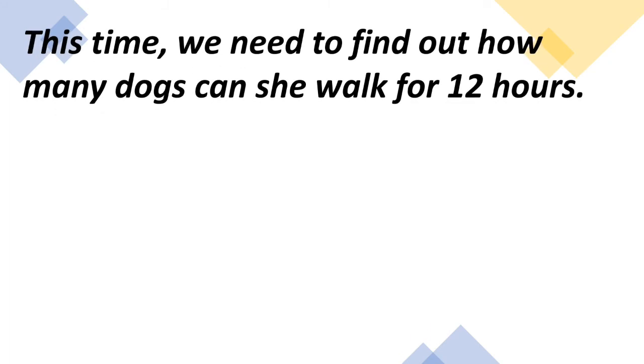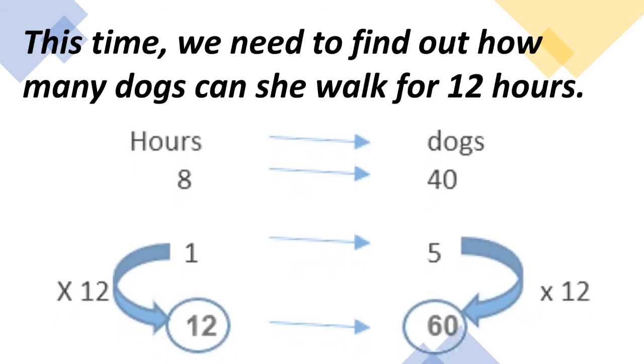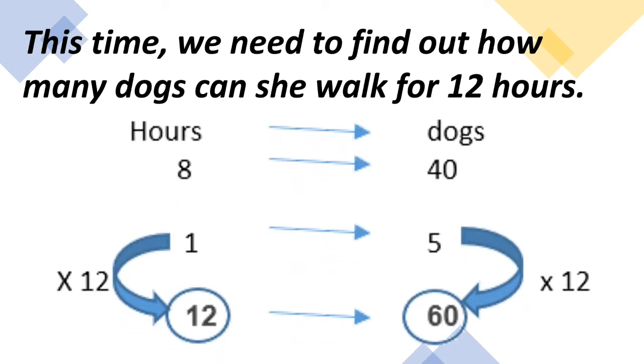So this time we need to find out how many dogs can she walk for 12 hours. So we are going to multiply 1 by 12, which gives us 12, and 5 multiplied by 12 gives us 60.